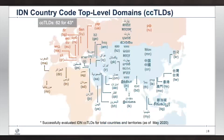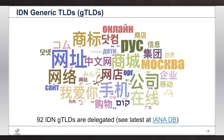IDN top level domain name labels are now possible. ICANN has been working with the community to delegate both country code TLDs and generic TLDs in local languages and scripts. In the ccTLD space, 62 strings have been evaluated successfully from 43 countries and territories, with 61 already delegated into the root zone. On the generic TLD side, the 2012 round allowed community applications for local language strings, and so far 92 internationalized domain names have been delegated as generic top level domains.